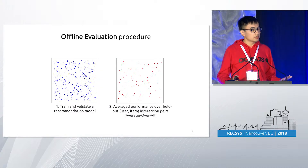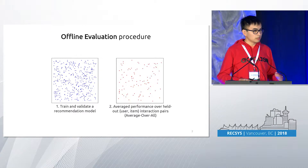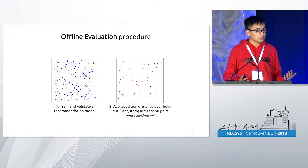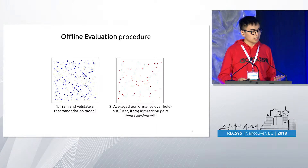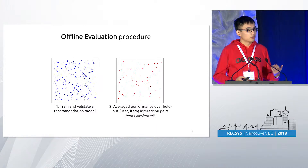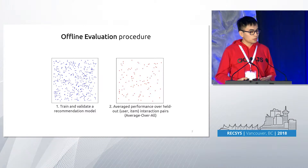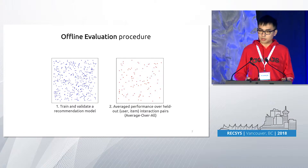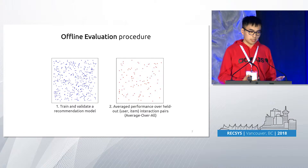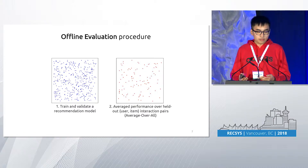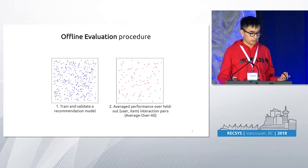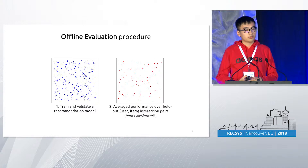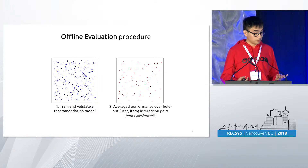Then, for all these user-item interactions, we randomly split them into a training set and a testing set. For the evaluation, we first train and validate a recommendation model on the training set, and then report average performance over the holdout user-item interaction pairs. We call this approach 'average overall'.